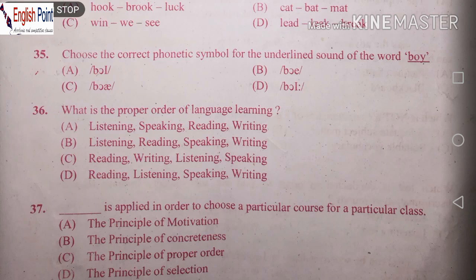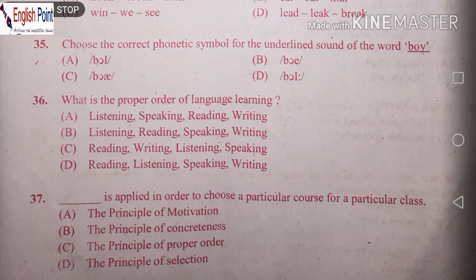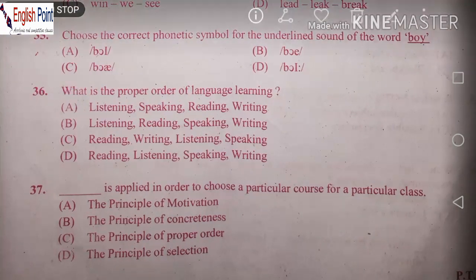What is the proper order of language learning? The options are: A) listening, speaking, reading and then writing; B) listening, reading, speaking then writing; C) reading, writing, listening and speaking; D) reading, listening, speaking and writing. The correct order is: first you listen carefully, then speaking comes, then reading, and then writing. This is the right answer — option A: listening, speaking, reading and writing.